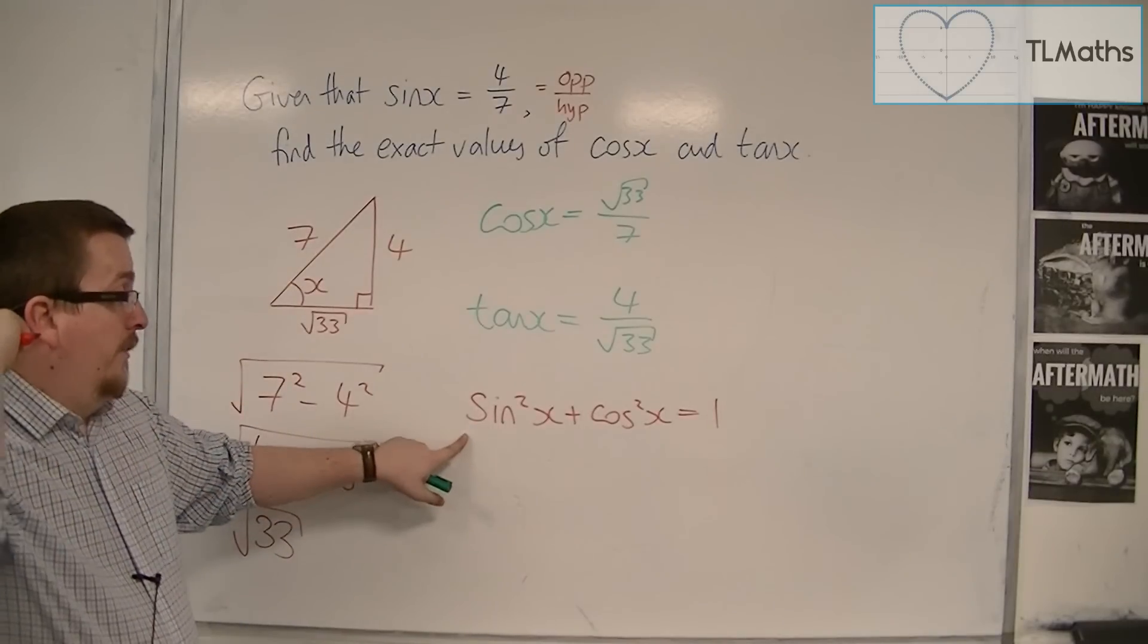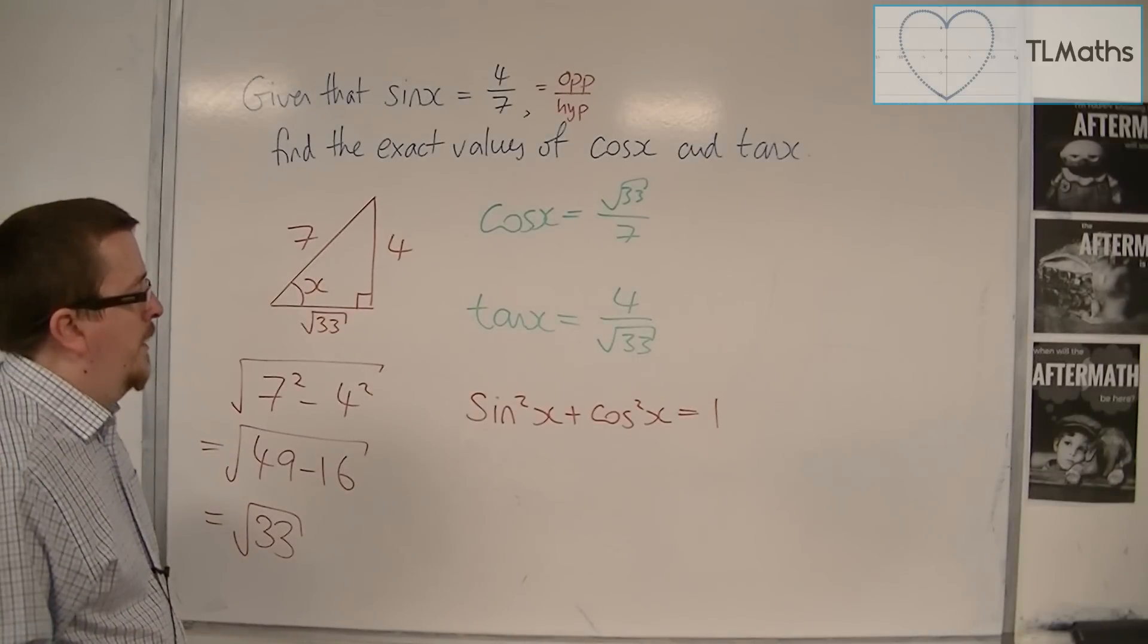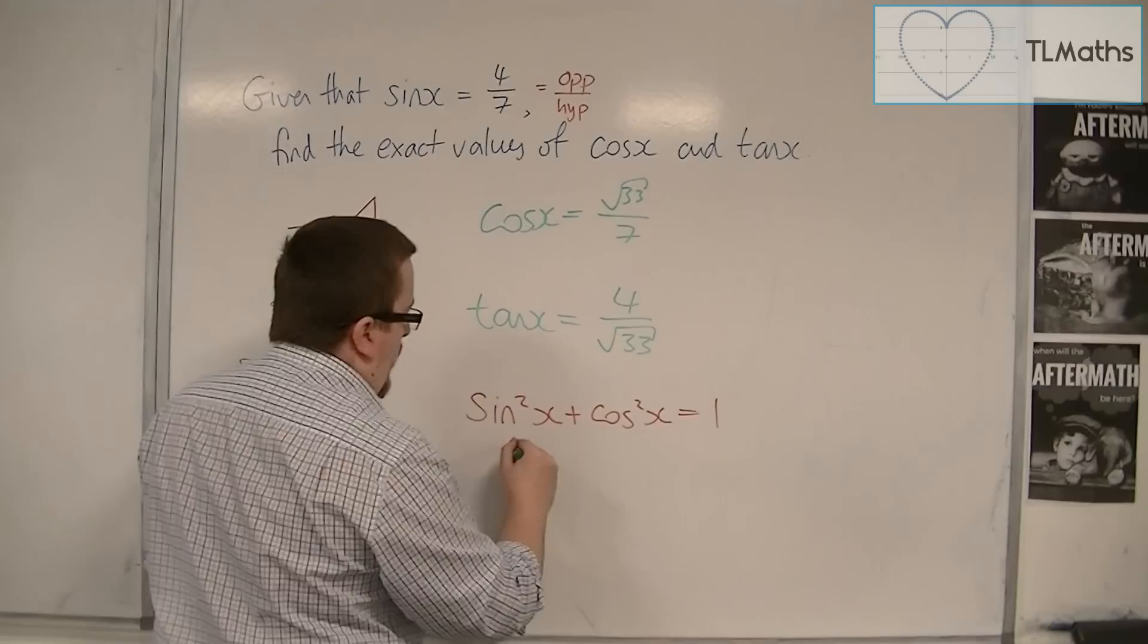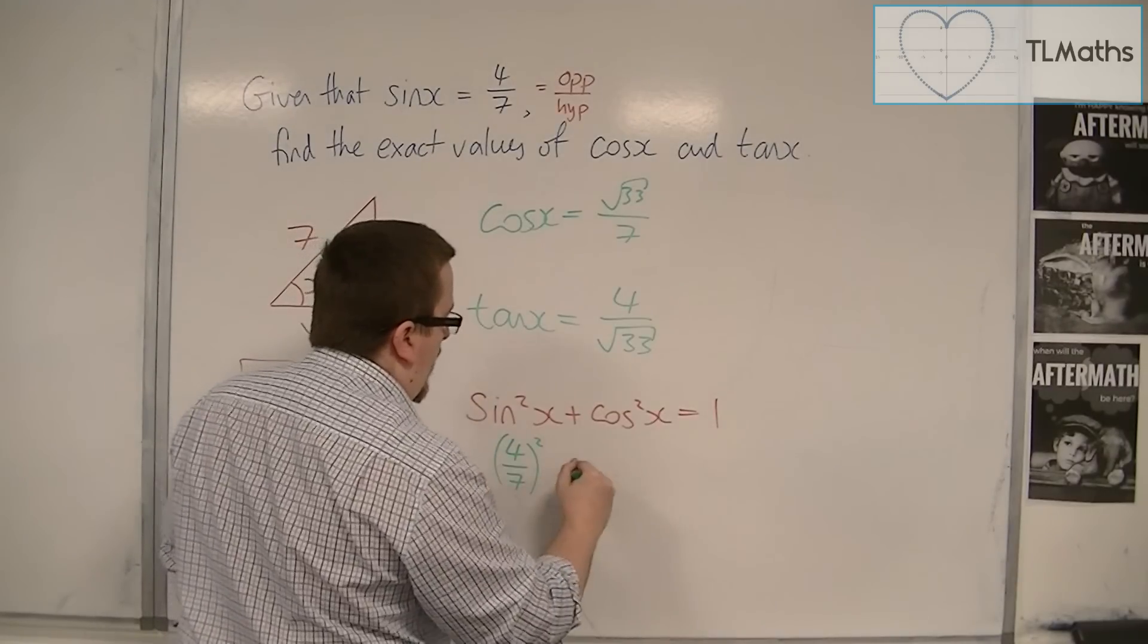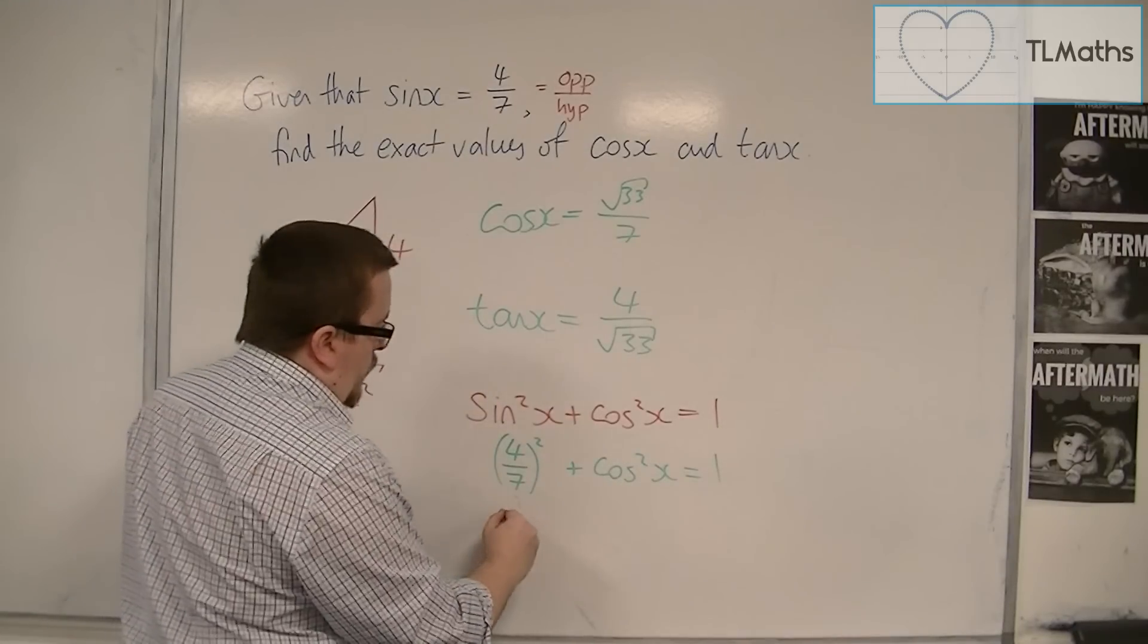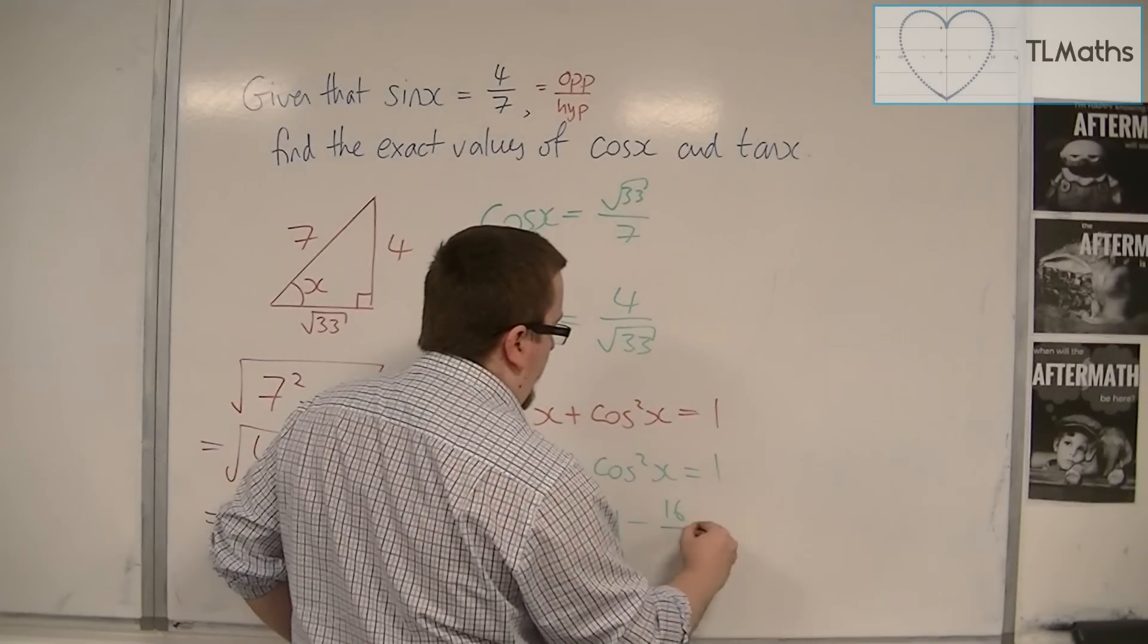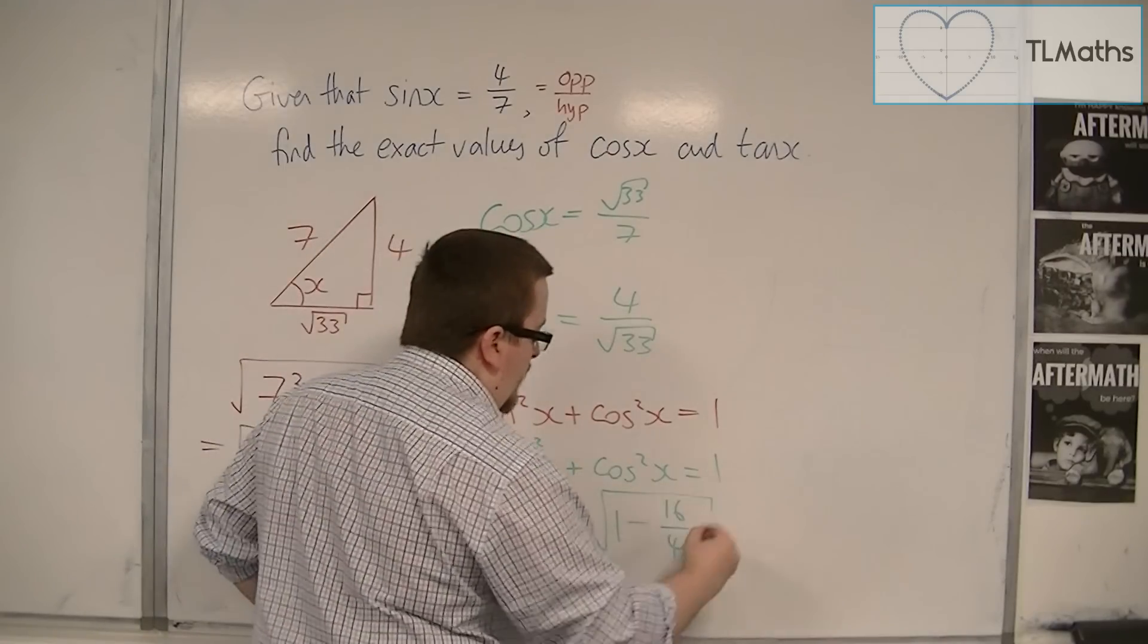So, we will find out where that comes from later in this section. Now, if you knew what sine x was, that's the 4 over 7, then we would have 4 over 7 squared plus cos squared equals 1. So, cos squared is 1 minus 4 squared over 7 squared, so 16 over 49.